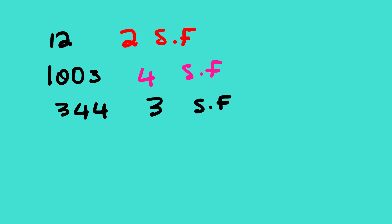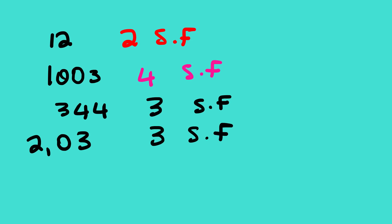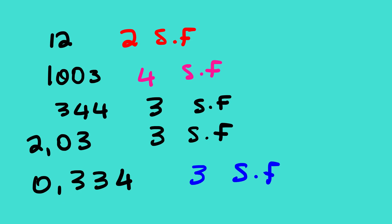For 1003 we have four significant figures. For 344, these are all non-zeros, so we have three significant figures. For 2.03 — we have a decimal point and the zero is in between non-zeros, so we have three significant figures. For 0.334 — we said that if we have a point and the zero is at the beginning, we do not count it, so we have three significant figures.